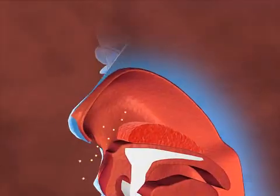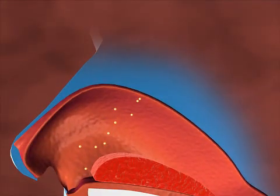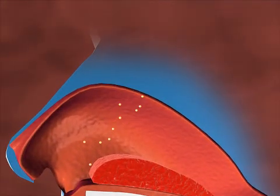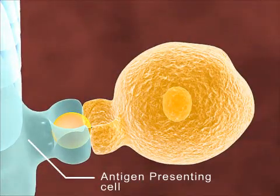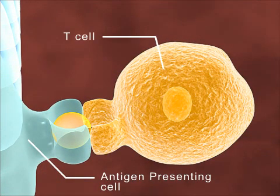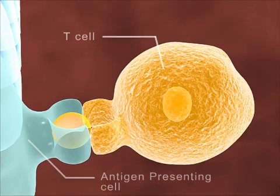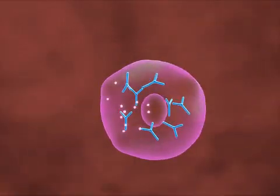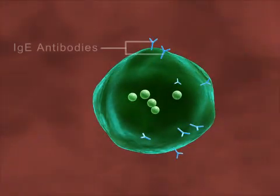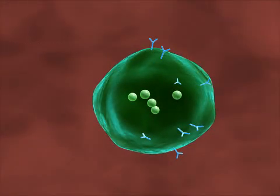On first exposure, the inhaled allergen enters the mucous membrane lining the nasal passages, where it is taken up by the antigen-presenting cell, which presents it to the T-cells. These T-cells activate the B-cells to release substances called IgE antibodies against the allergen. These IgE antibodies sit on the surface of the mast cells.